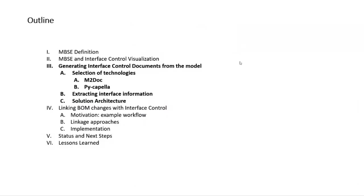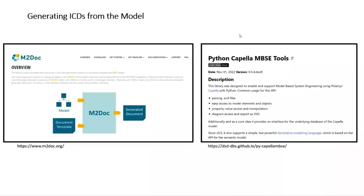Now let's talk about how to generate these from the model built in Capella. There are two approaches: one is a tool called M2Doc, which lets you take a Capella model and a template and create a document from it. The other is a toolset called the Python Capella MBSE Toolset by a third party. I picked the Python Capella MBSE Toolset because of my familiarity with Python — I'm already a Python programmer and was able to get started very quickly, so I didn't look deeply into M2Doc.